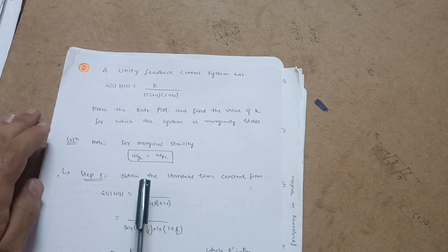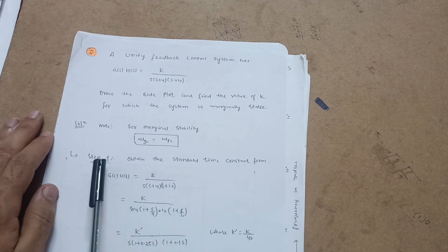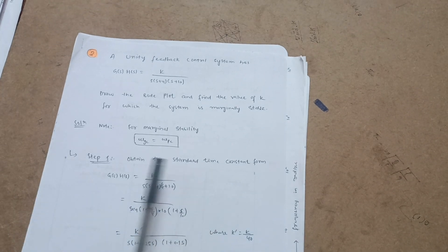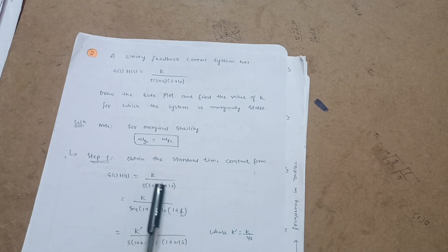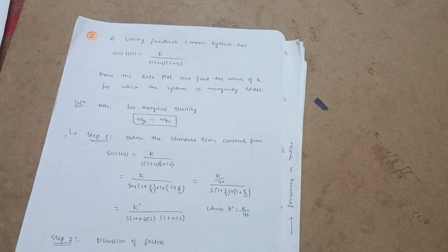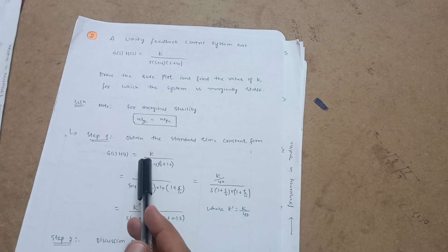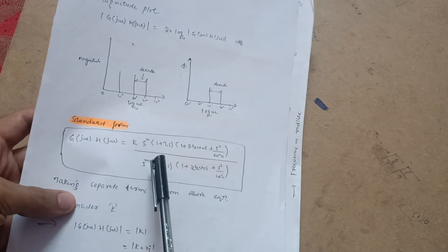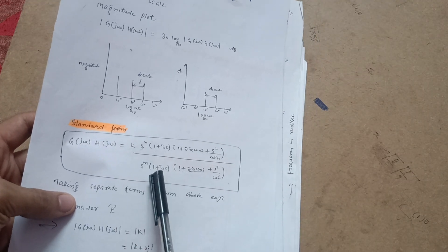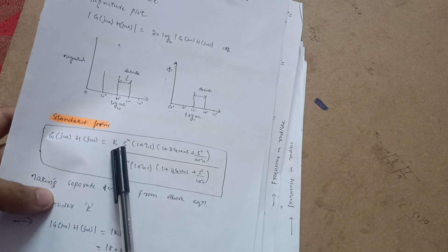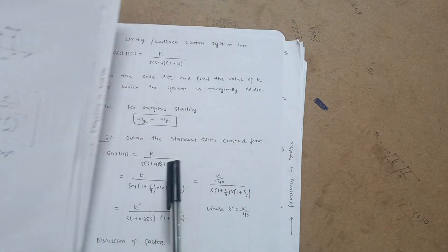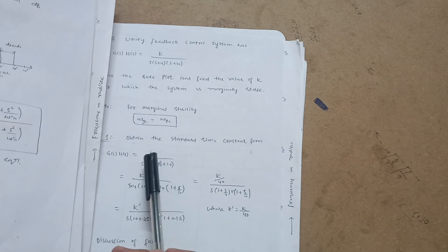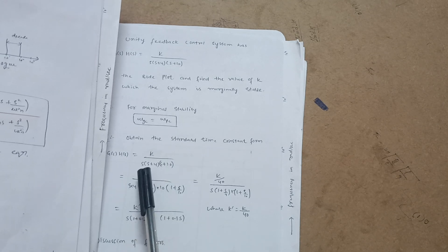Don't worry about the steps — only three steps to follow to get full marks in the examination. Step one is to obtain the standard time constant form. G(s)H(s) = K / [s(s+4)(s+10)]. You have to make this equation in the standard 1+Ts form, as I already explained in the previous lecture. In the numerator there are no zeros, so only K is present.